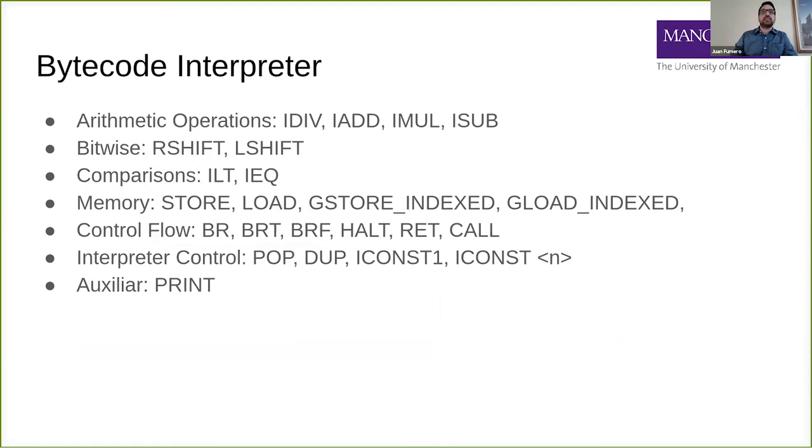Let me show you an example. The interpreter is composed by integer operations - division, addition, multiplications, and subtraction. We also include shift operations, comparisons, and memory operations like local load stores, and also introduce global stores and loads in an array format. We have control flow operations like branch, branch if true, branch if false, and function calls. We also have typical operations in bytecodes like pop, push, stack duplication, and load constants. We also have auxiliary bytecodes for printing. Basically, what we do is push something in a buffer and then print after that.